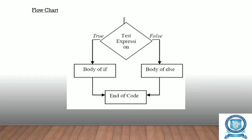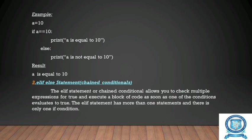This is the flowchart for if-else. The diamond box checks the condition — if the test expression is true, then the body of if will be executed on the left-hand side. If the condition is false, the body of the else statement will be executed. For example: a is equal to 10. If a is equal to 10, print 'a is equal to 10'; otherwise, the else part prints 'a is not equal to 10'.